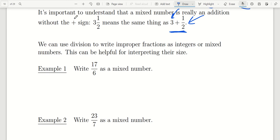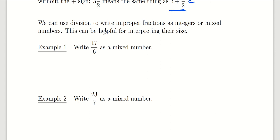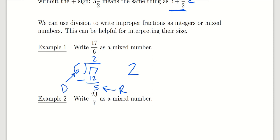We can convert back and forth between improper form and mixed number. To change from an improper fraction to a mixed number, all we have to do is long division. For example, 6 divides into 17 — it doesn't divide evenly, but it will go in 2 times. 2 times 6 is 12. I subtract and get a remainder of 5. To write the mixed number, you put the quotient down, which is 2, and then write your remainder over your divisor. So this is going to be 2 and 5 sixths — 17 over 6 is equivalent to the mixed number 2 and 5 sixths.